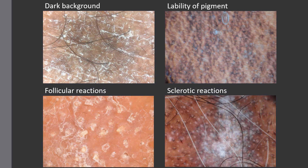These differences are due to several reasons. First of all, in darker phototypes we have a darker background, which may mask underlying structures, especially vessels. Moreover, in skin of color we have specific skin reaction patterns which are less commonly seen in Caucasians and in fair skin — namely a higher tendency to pigment lability, which is responsible for pigmented structures on dermoscopy, and follicular and sclerotic reactions, which are responsible for specific dermoscopic findings.